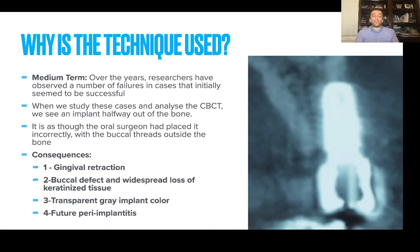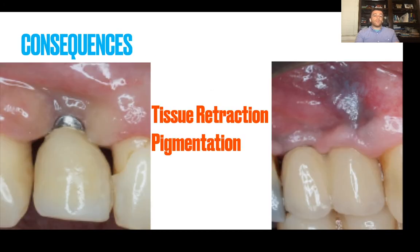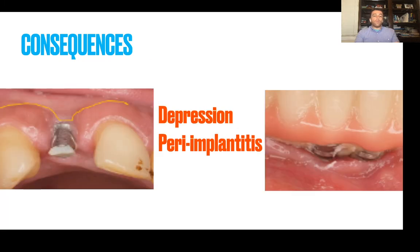Complications include gingival retraction, buccal defects, and shine-through or transparent color of the implant showing through the tissue. It can also lead to a cascade of peri-implantitis complications. Specifically, these complications include tissue retraction, titanium shine-through the tissue, a depression or buccal collapse, and eventual peri-implantitis.